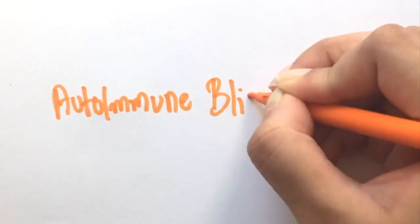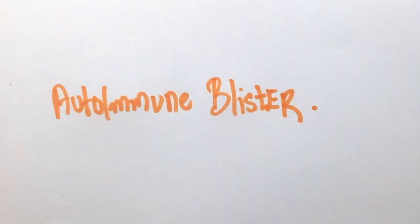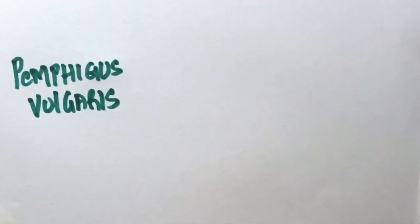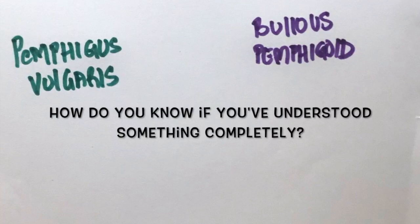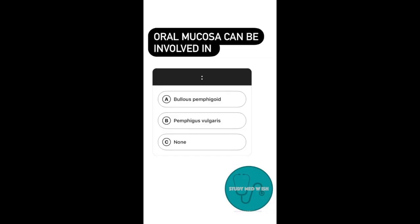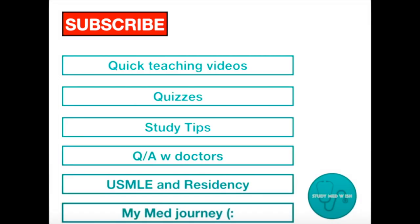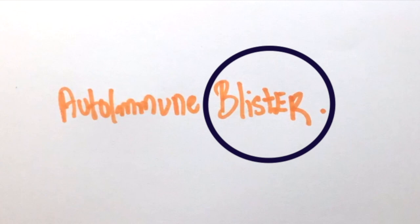Hello everyone, welcome back. In this video we're going to understand the different autoimmune blistering diseases. There are two main ones: pemphigus vulgaris and bullous pemphigoid. They can be a little confusing, but I'm sure you'll master it by the end of this video. To make sure we've understood the contents in and out, I'll discuss questions so you get a rough idea of how concepts are tested.